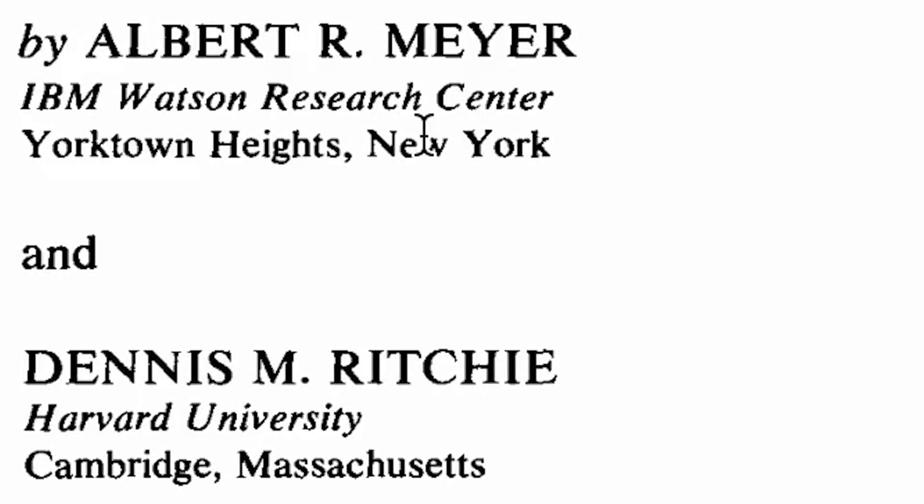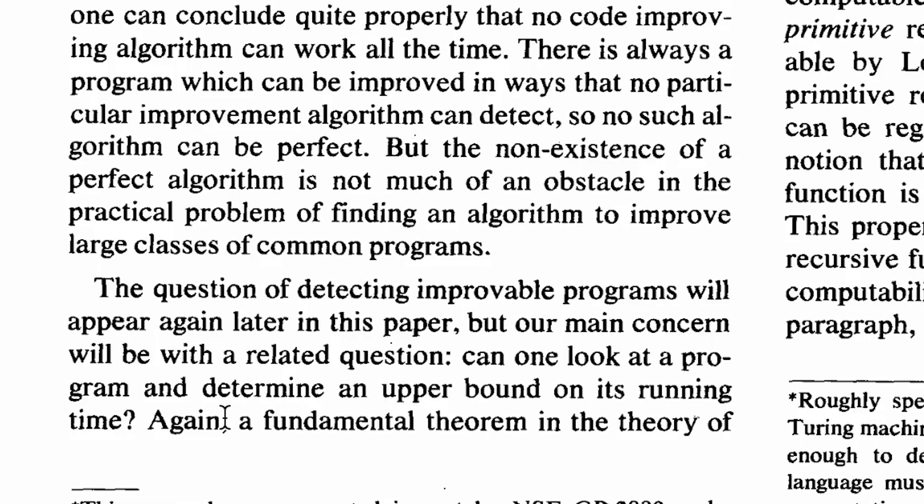Before I show you GPT-4 in action, I need to go back to 1967 when a guy called Albert Meyer and Dennis Ritchie — yes, that Dennis Ritchie, the guy who created the C programming language — created a new programming language called Loop. And Loop was created before C was. Now if you've never heard of the Loop programming language before, that's okay because almost nobody has.